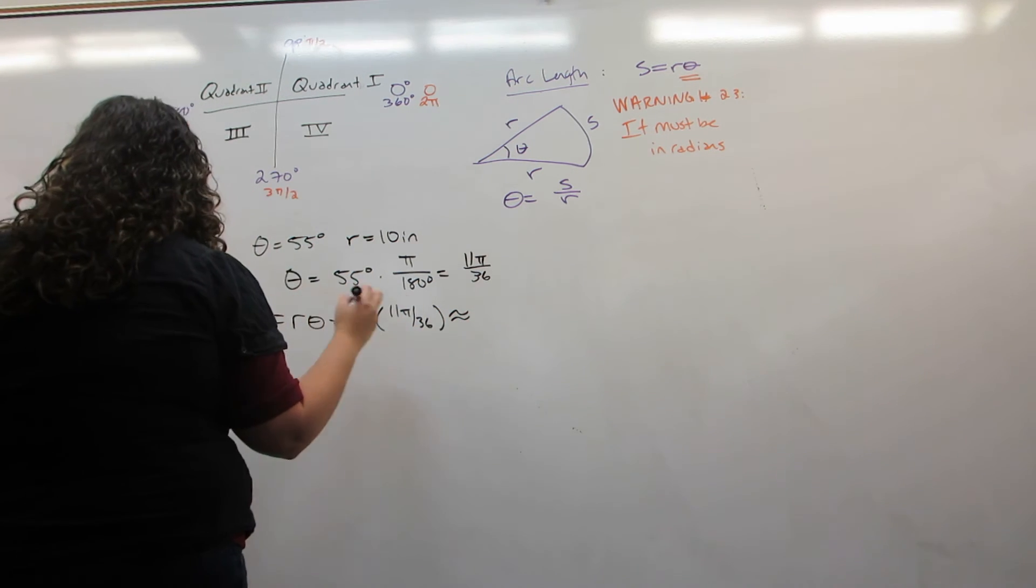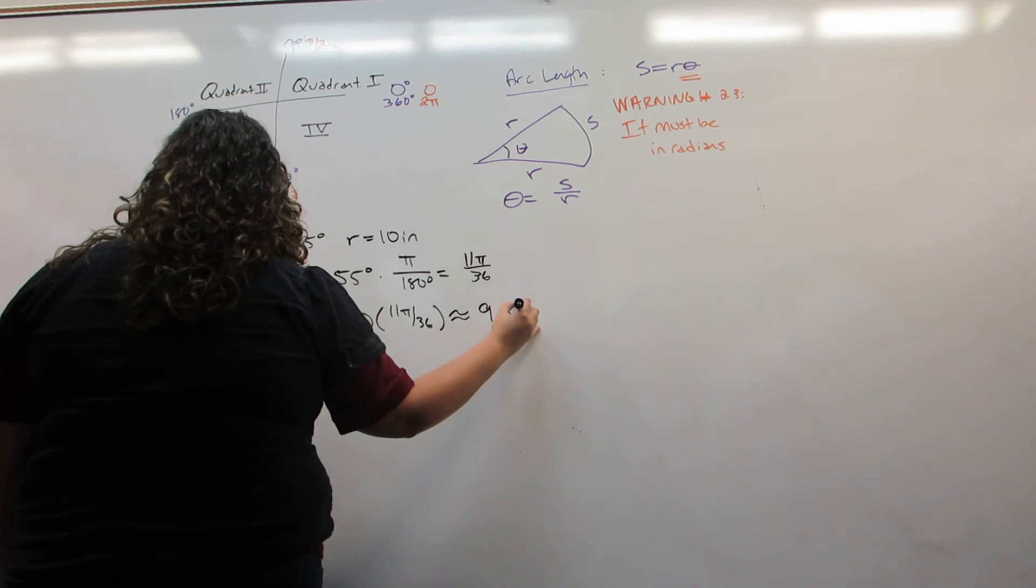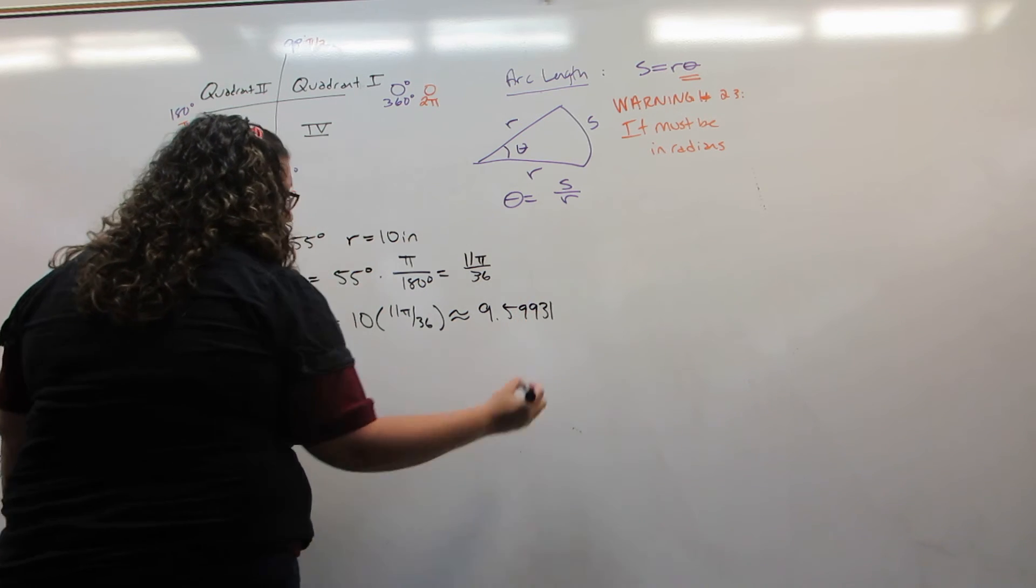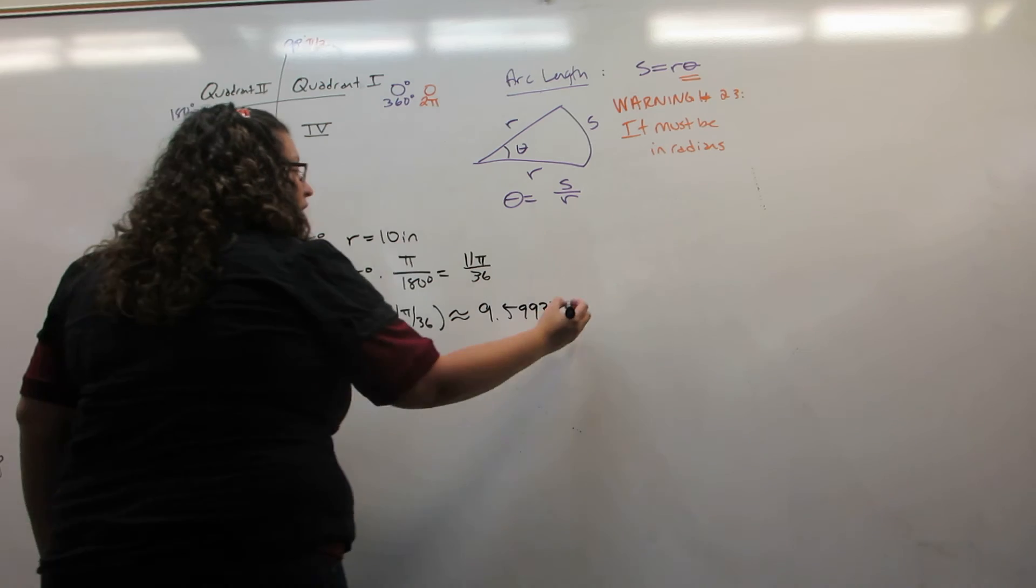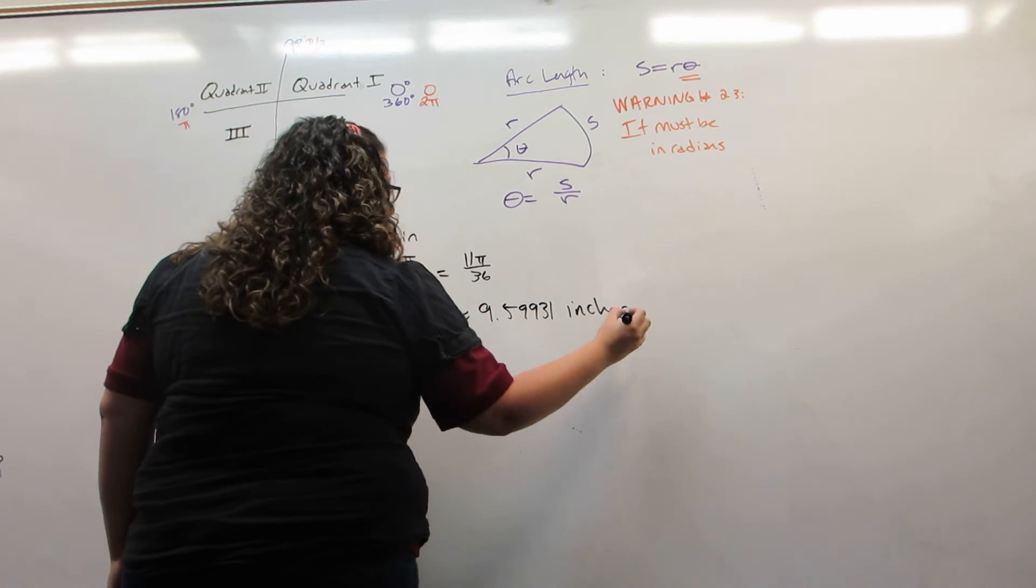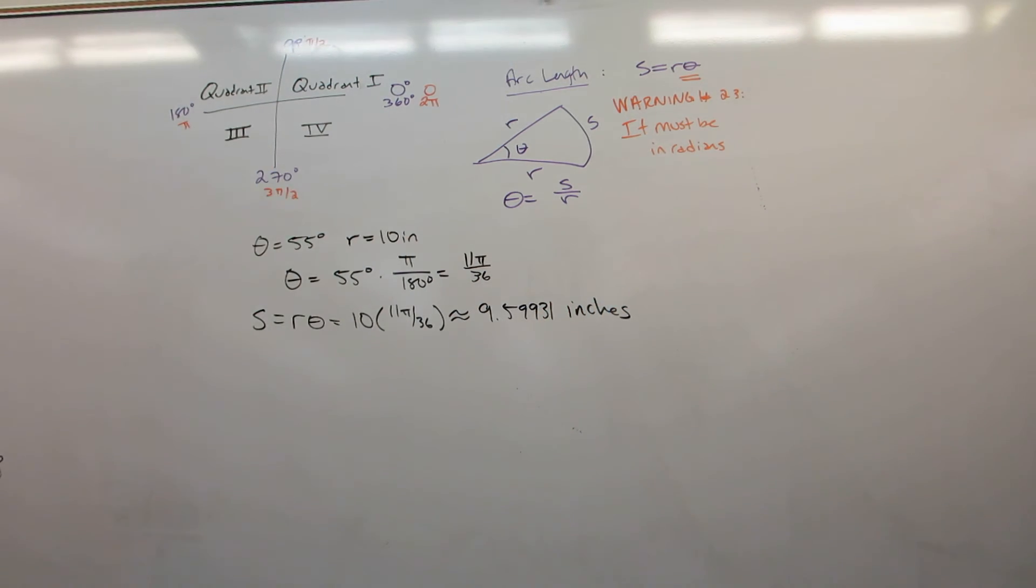If you use a calculator, this is approximately 9.599 inches. The arc length and the radius will have the same units, so this is going to be in inches.